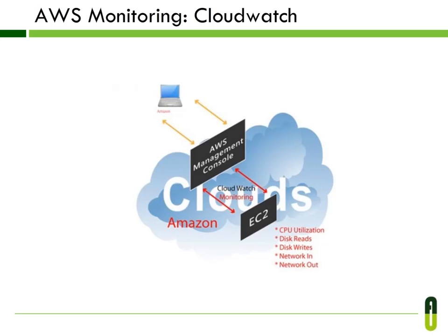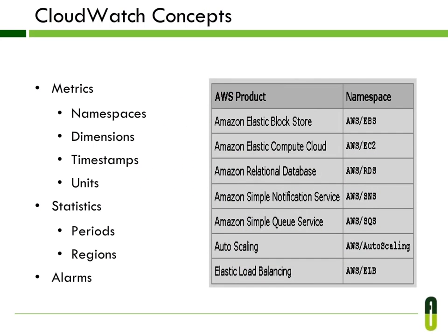AWS CloudWatch can monitor Amazon EBS, Amazon EC2, Amazon RDS, Amazon SNS, Amazon SQS, Auto Scaling, and Elastic Load Balancing. Metrics are defined by name, namespace, dimensions, and timestamp. Data can come from any application or business activity from which you collect data, not just Amazon Web Services products. Namespaces — as seen on the right side — represent different AWS services and are essentially short forms of the full Amazon product names.